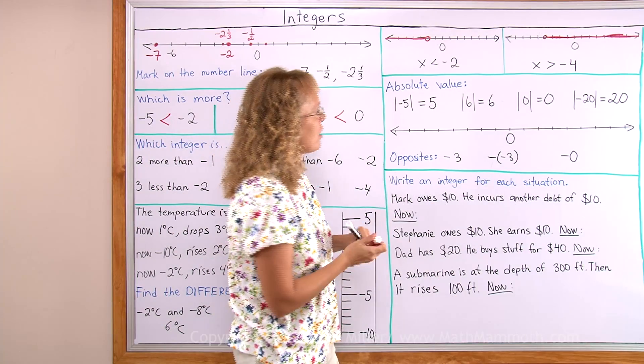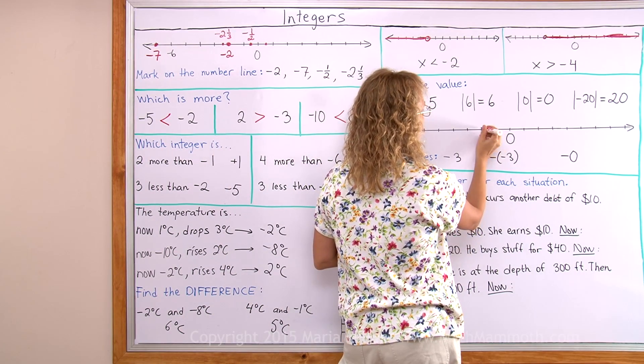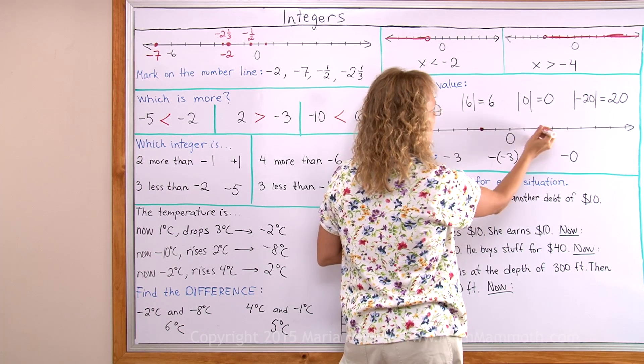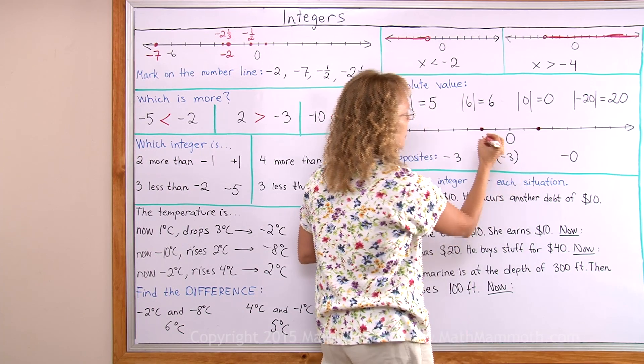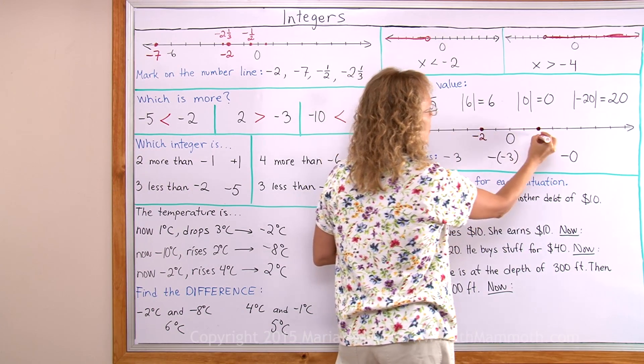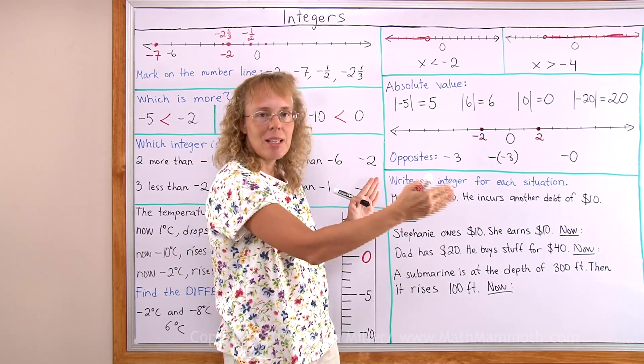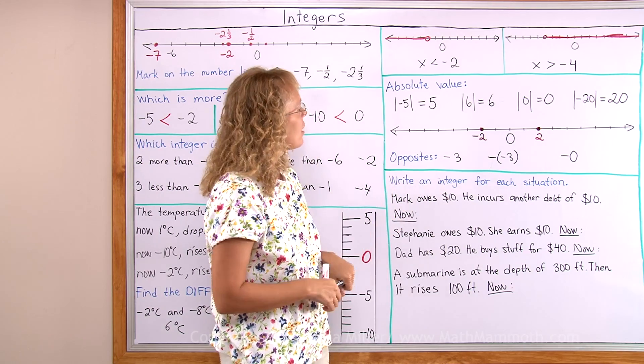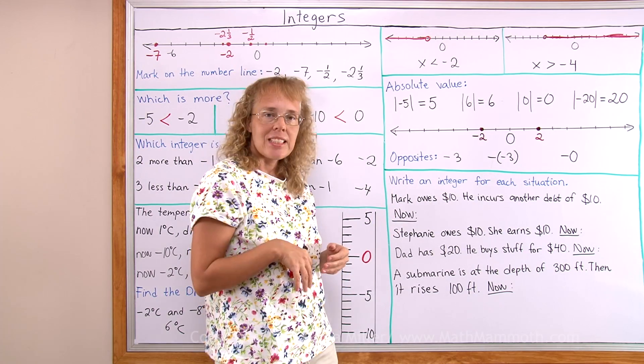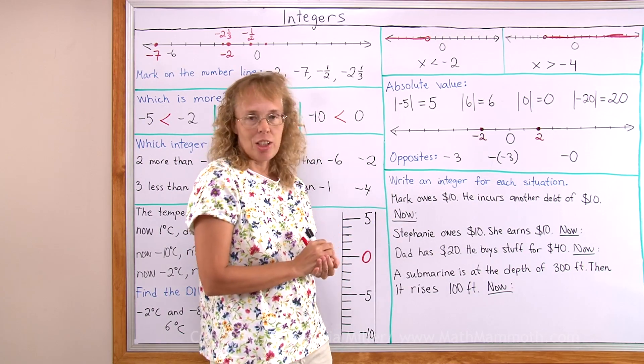Notice also here that if I have two numbers that are on opposite sides of 0, like these ones, negative 2 and 2. They have the same absolute value. Because they are both at the same distance from 0. And that leads us to the concept of opposite of a number.